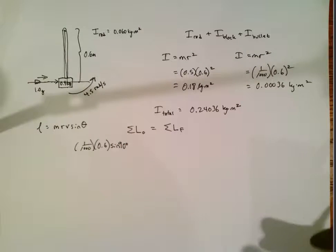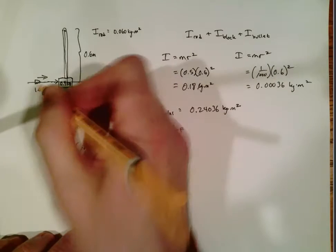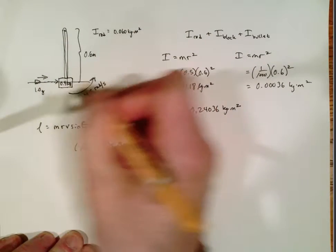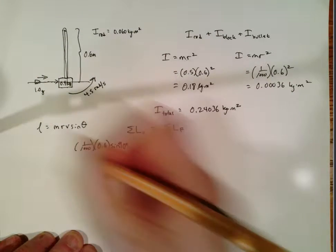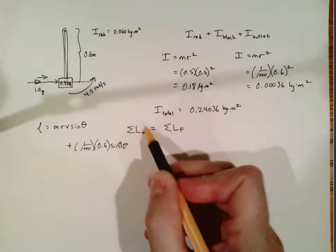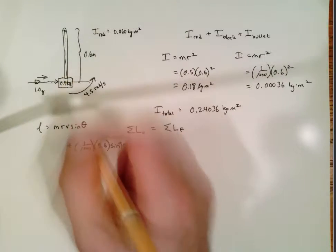We should also stop for a moment and think about direction because the motion of the bullet is this way which is tending to be the counterclockwise direction around the pivot point and counterclockwise is traditionally considered to be the positive direction. So that's all that has initial angular momentum. Initially the rod here is at rest.